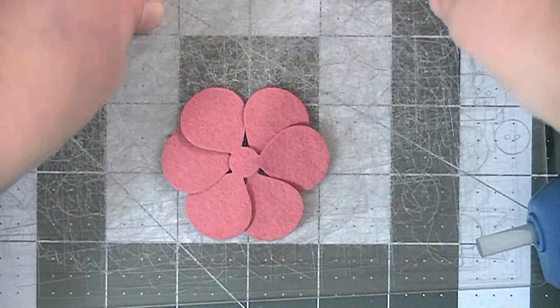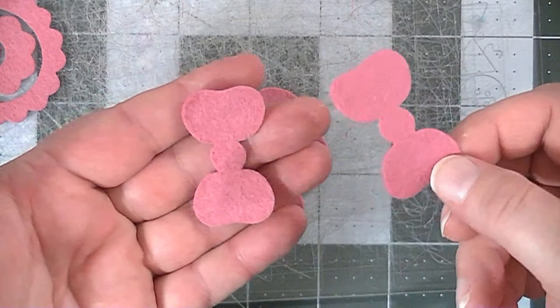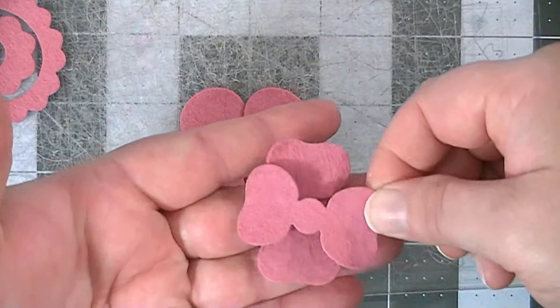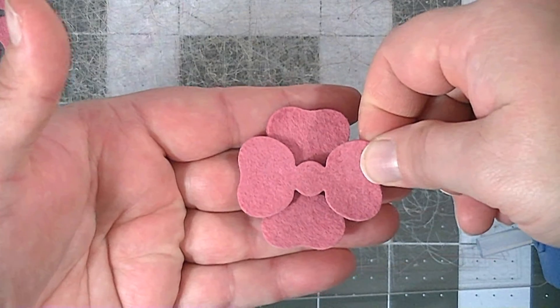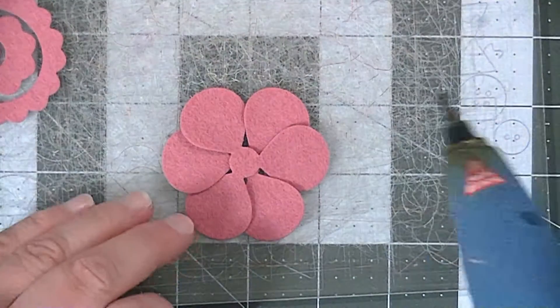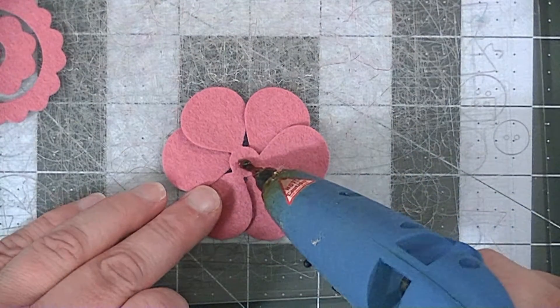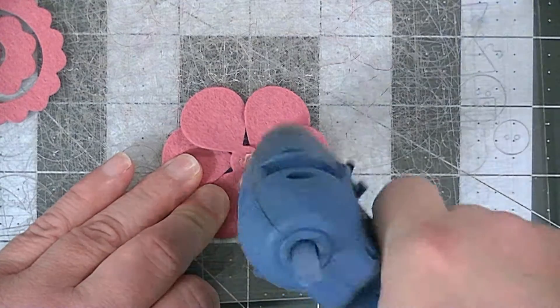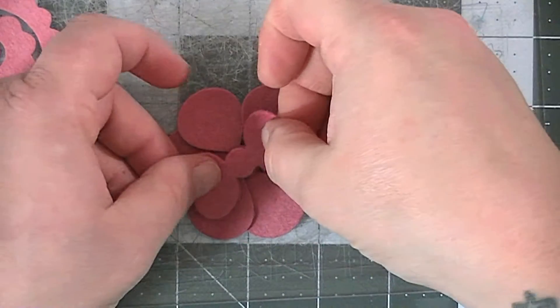The next pieces you're going to use are these two that look like bow ties, and you're going to glue them crisscross. So put a little dollop of glue on this piece and glue one on there.